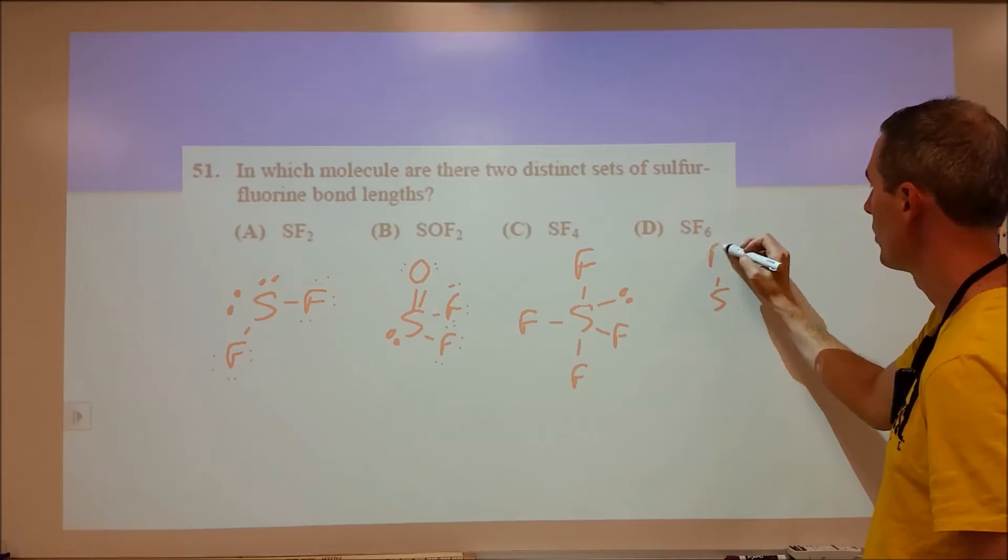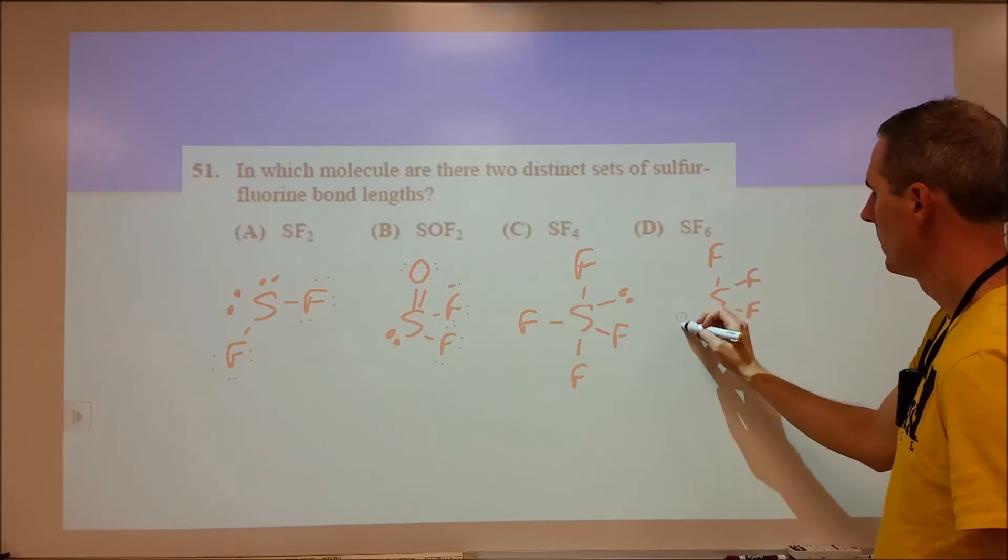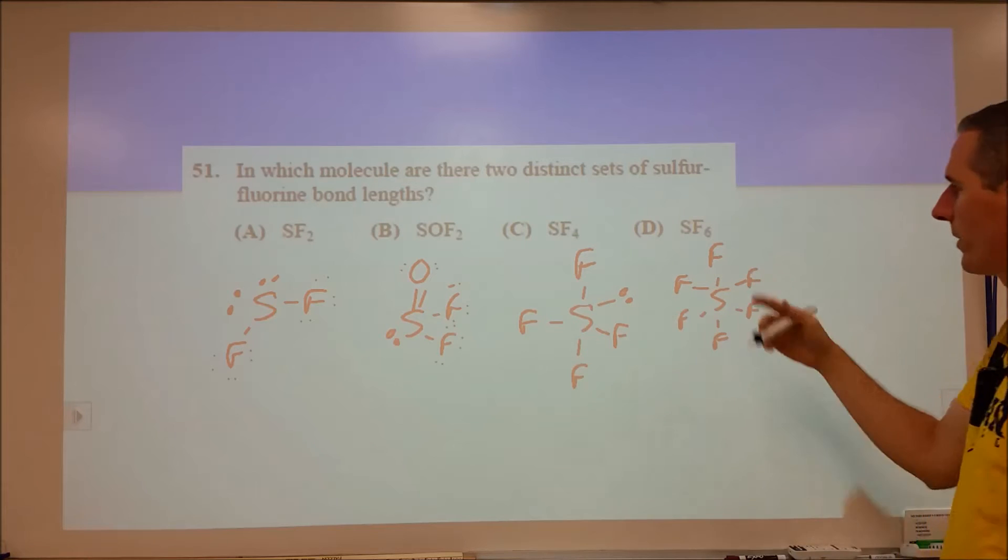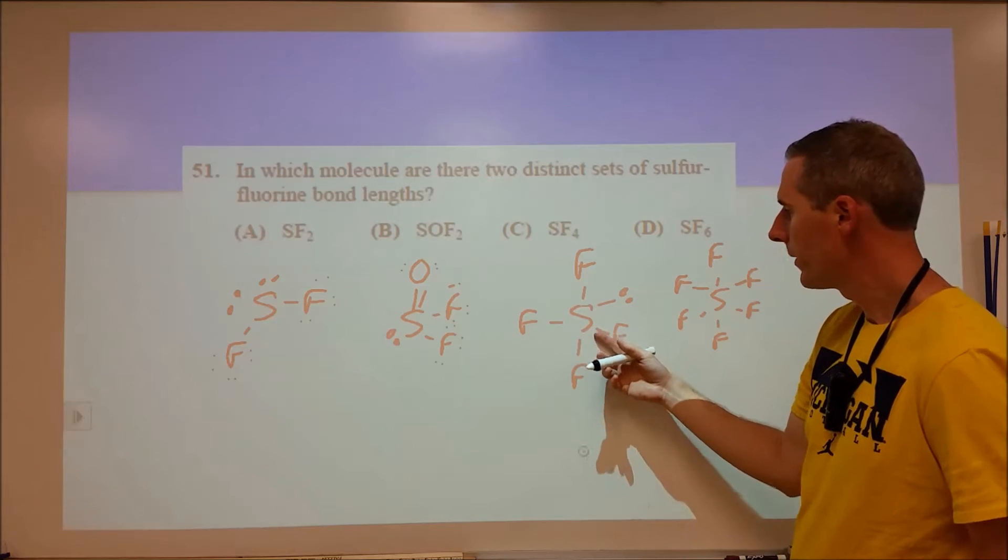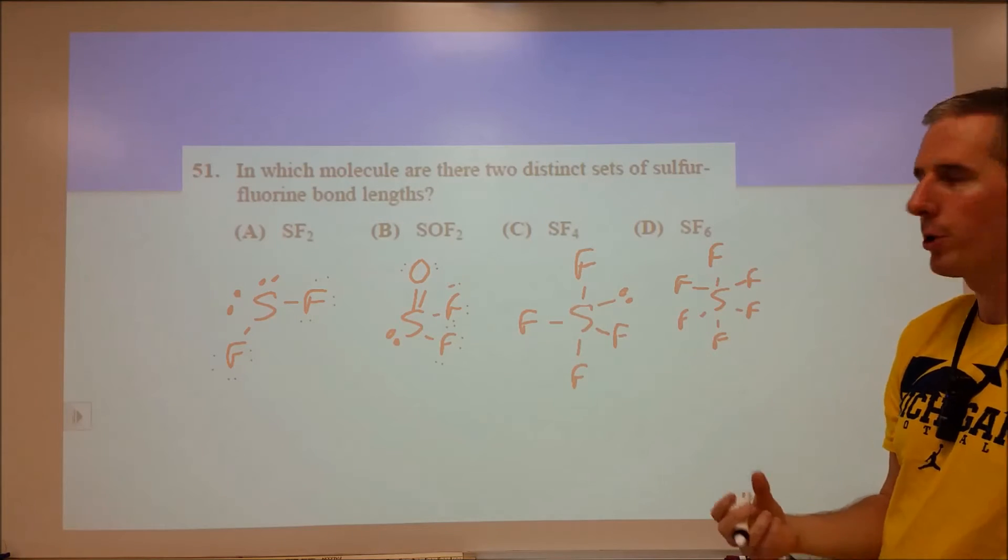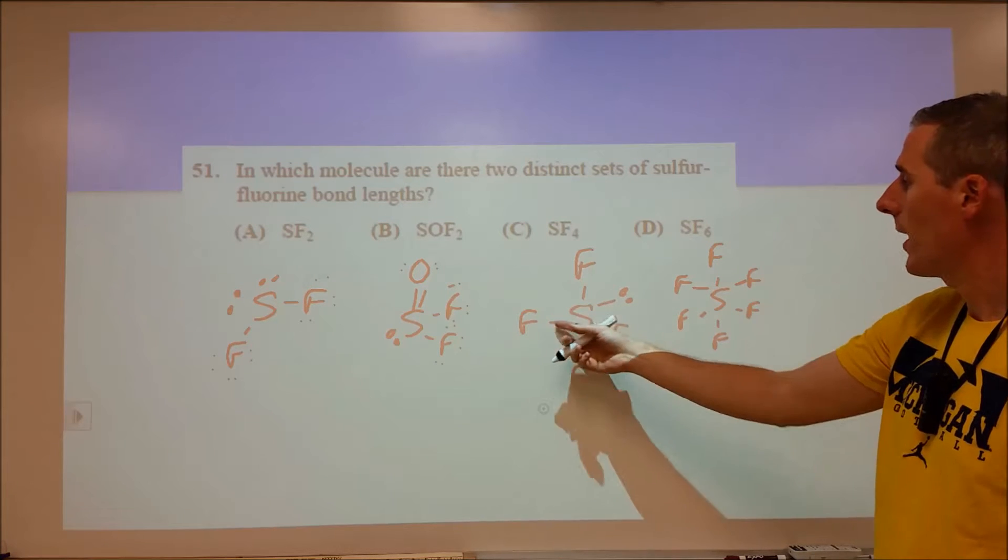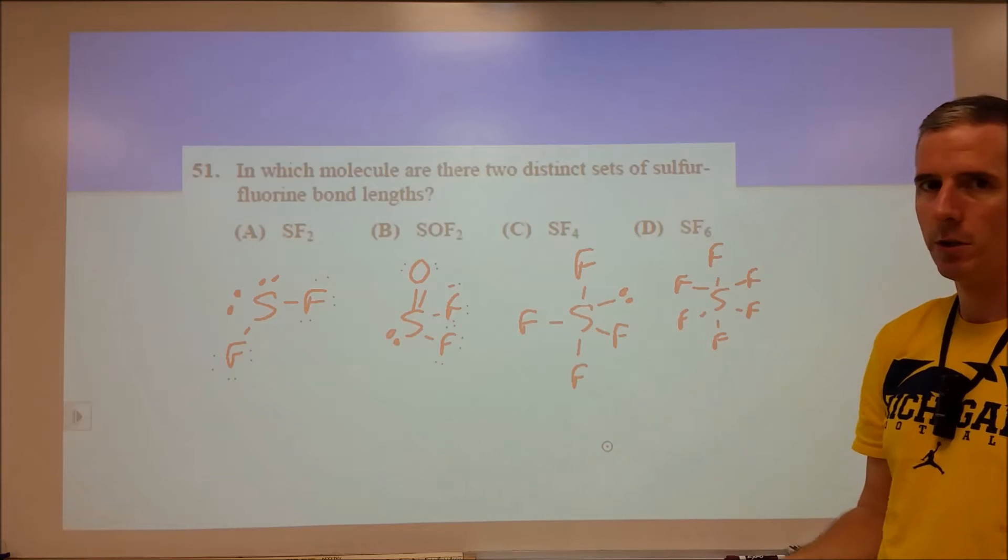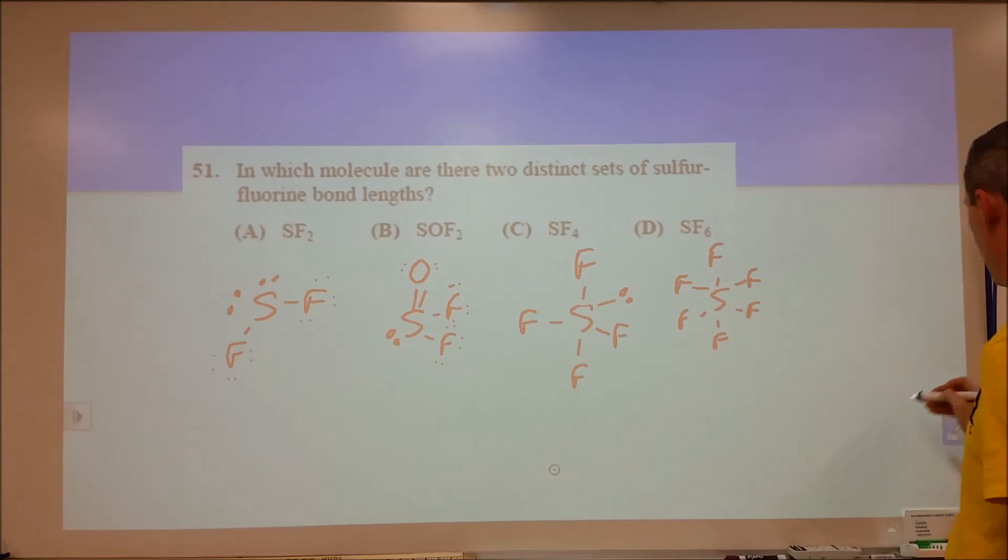Because SF6 is octahedral. So in that case we're looking at a situation where everything's going to be the same. These are different locations, might change the repulsion and attraction levels between different things. So that might cause the axial and equatorial positions to be different in bond lengths. So C was the answer.